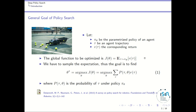We cannot get this expectation directly, so we have to sample it using as many trajectories as possible. The goal is to find the optimal set of policy parameters — theta star — which corresponds to the maximum of J of theta. J of theta can be rewritten as the sum over trajectories of the probability of a particular trajectory given theta, times the return of the corresponding trajectory. That's the definition of this expectation once we sample it.